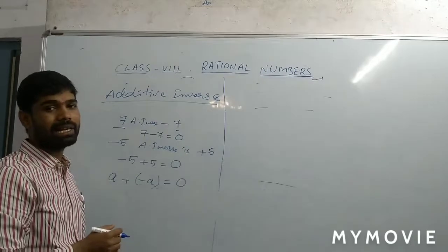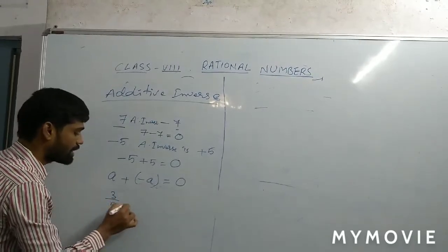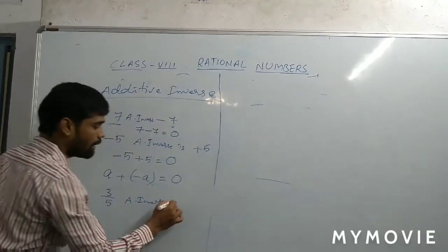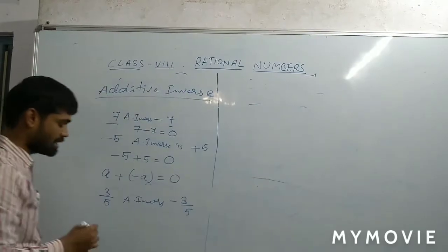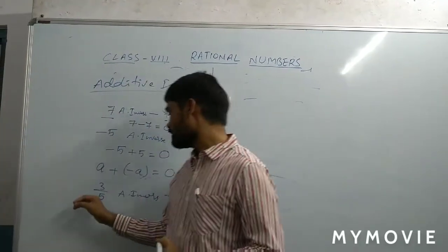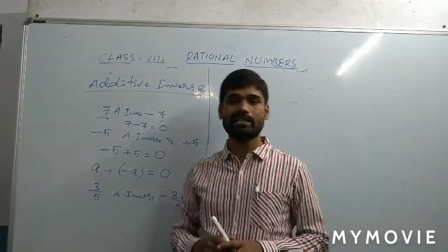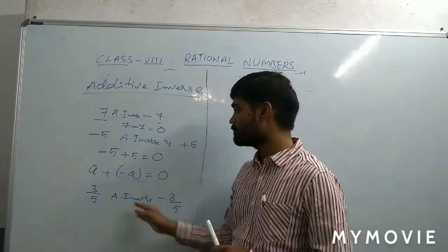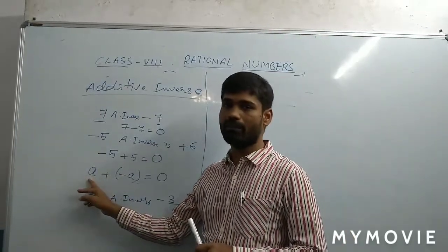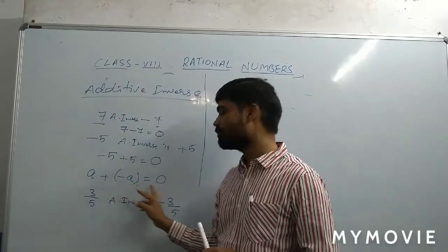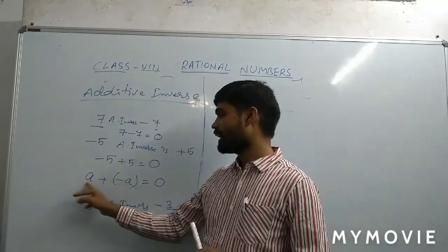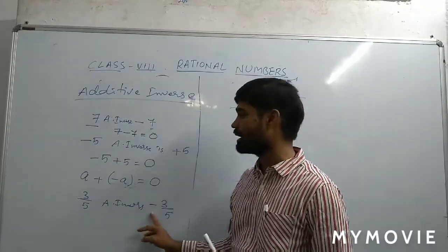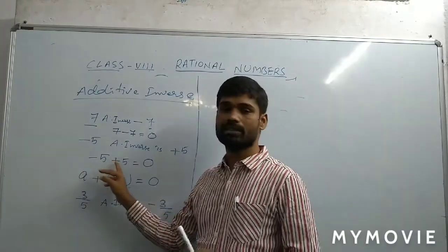I hope you understood about the additive inverse. For example, 3 by 5 — can you say the additive inverse? Just change the symbol: the additive inverse is minus 3 by 5. Because a is a rational number, when we add its additive inverse, the sum should be equal to 0. That's why A additive inverse is minus A. So, 3 by 5 additive inverse is minus 3 by 5, and minus 5 additive inverse is plus 5.